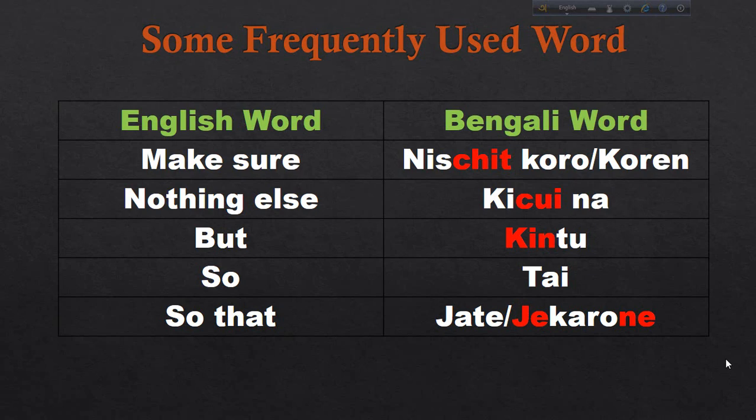So the transition words here are 'jate' and 'jaykarone', meaning 'so that'. The words covered so far are: 'Nishchit Koro', 'Nishchit Koren', 'kichuina', 'kintu', 'tai', 'jate', and 'jaykarone'.